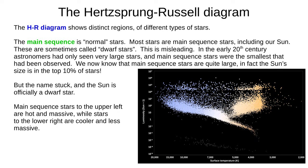Now that we understand the HR diagram, let's look at the different regions in it. The main sequence contains normal stars — most stars, including the Sun, are main sequence stars. These are sometimes called dwarf stars, which is misleading. In the early 20th century we'd only been able to study very large stars and main sequence stars were the smallest we'd observed. Now we know that main sequence stars are quite large, and the Milky Way is full of stars too small and dim to make it onto this diagram of the 30,000 brightest. Our Sun is in fact in the top 10% by size, but the name stuck and the Sun is officially a dwarf star. Stars in the upper left of the main sequence are hot, bright and massive, while stars to the lower right are cooler, dimmer and less massive.